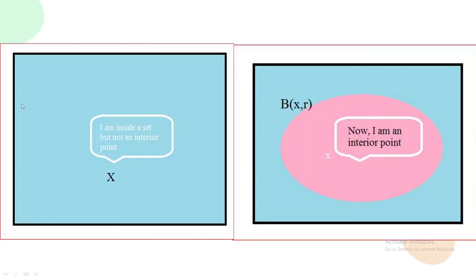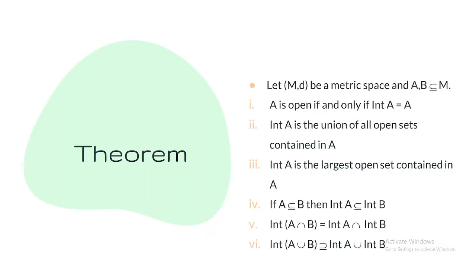To illustrate: if I take a point x and cannot draw any open ball around it that stays inside A, then x is not an interior point. But if I take a point and draw an open ball around it that is contained in A, then that point x is an interior point. Some key theorems: A is open if and only if its interior equals A. The interior of A is the union of all open sets contained in A and is the largest open set within A. If A is contained in B, then Int(A) is contained in Int(B). Also, Int(A ∩ B) = Int(A) ∩ Int(B), and Int(A ∪ B) contains Int(A) ∪ Int(B) — though equality need not hold for the union.